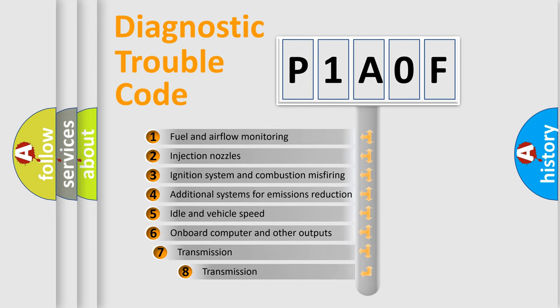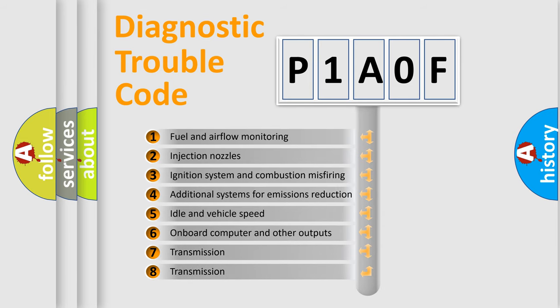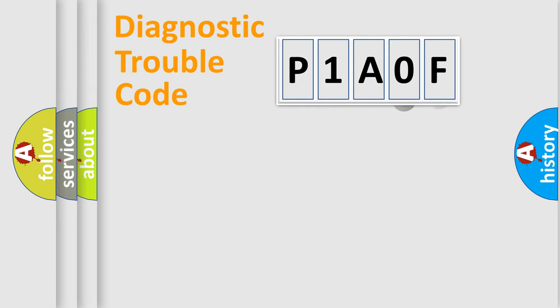The third character specifies a subset of errors. The distribution shown is valid only for the standardized DTC code. Only the last two characters define the specific fault of the group.